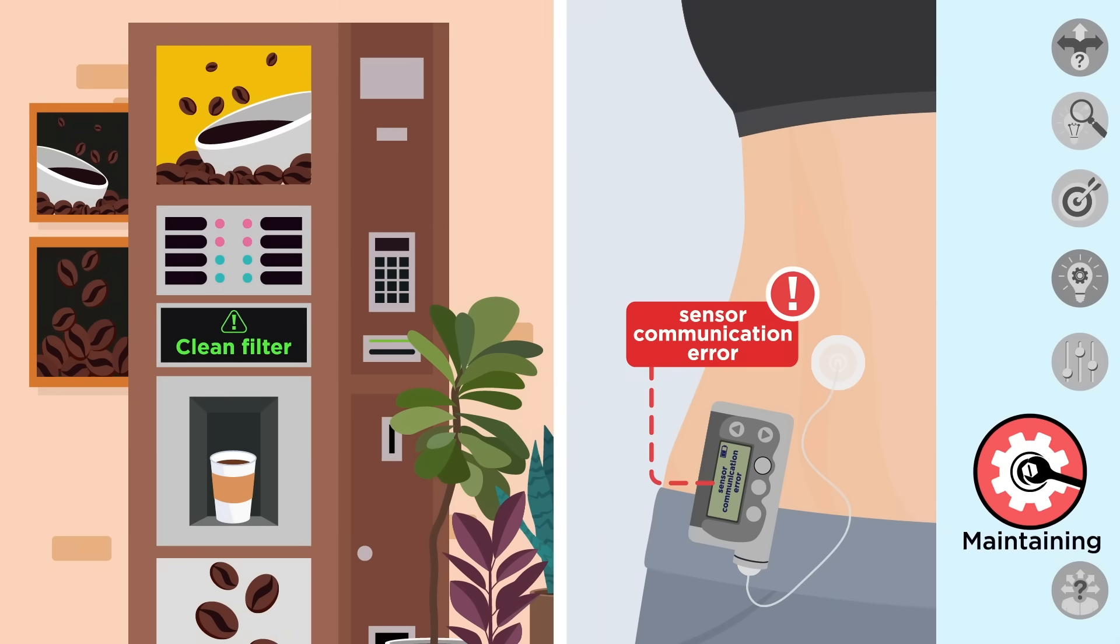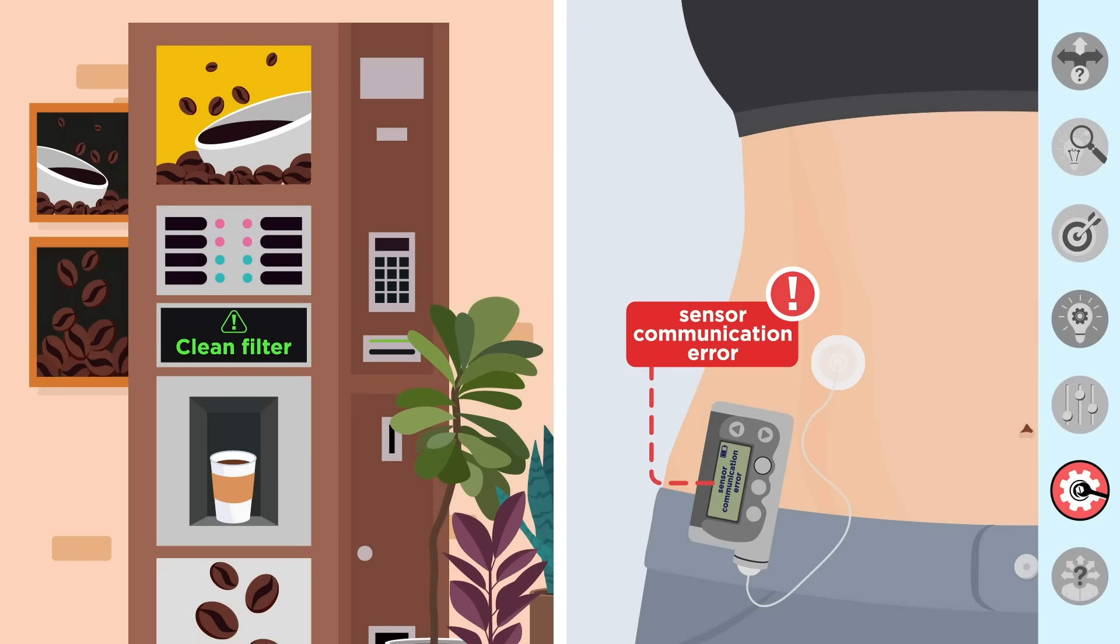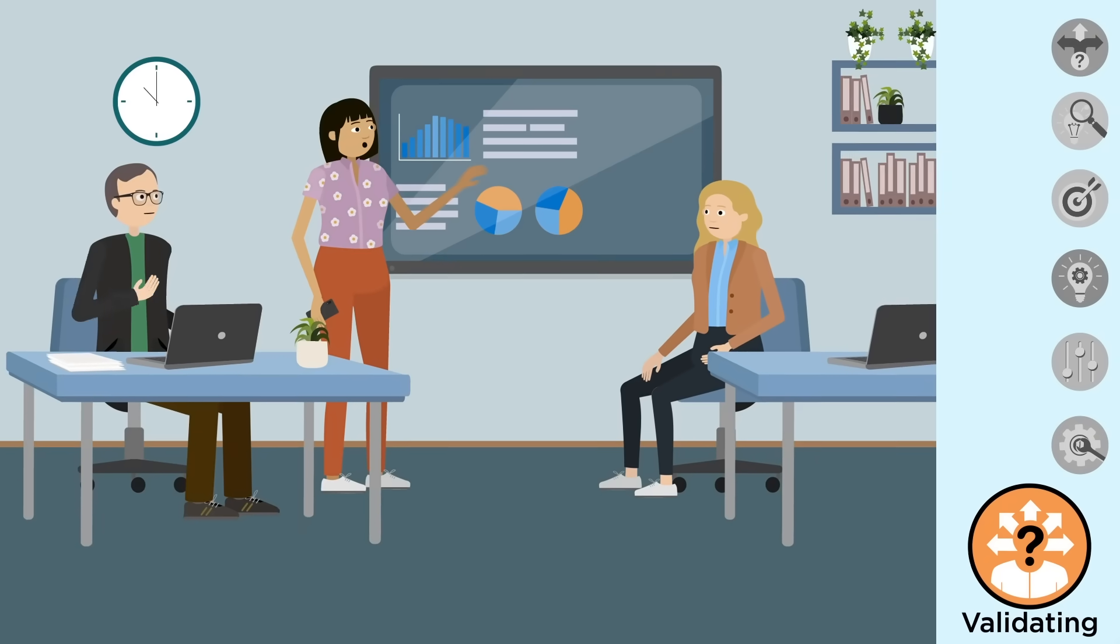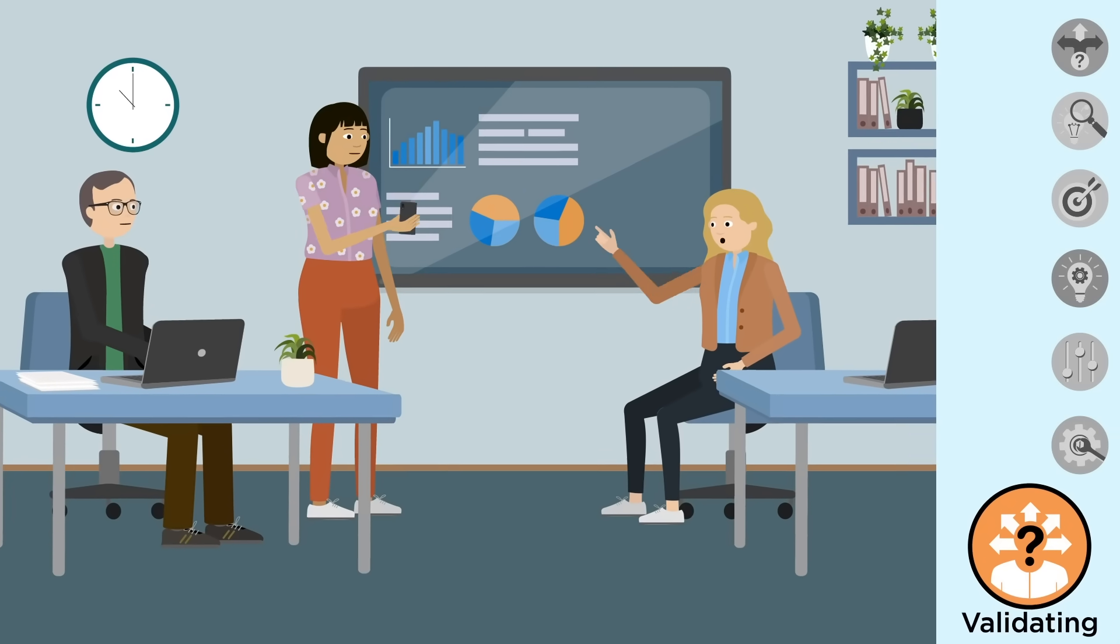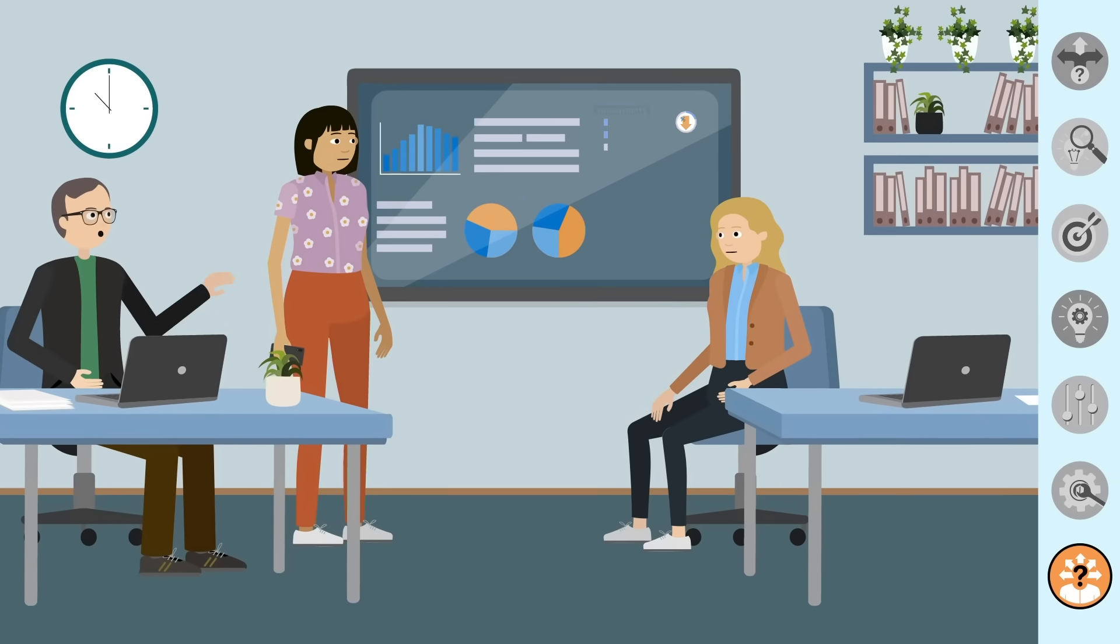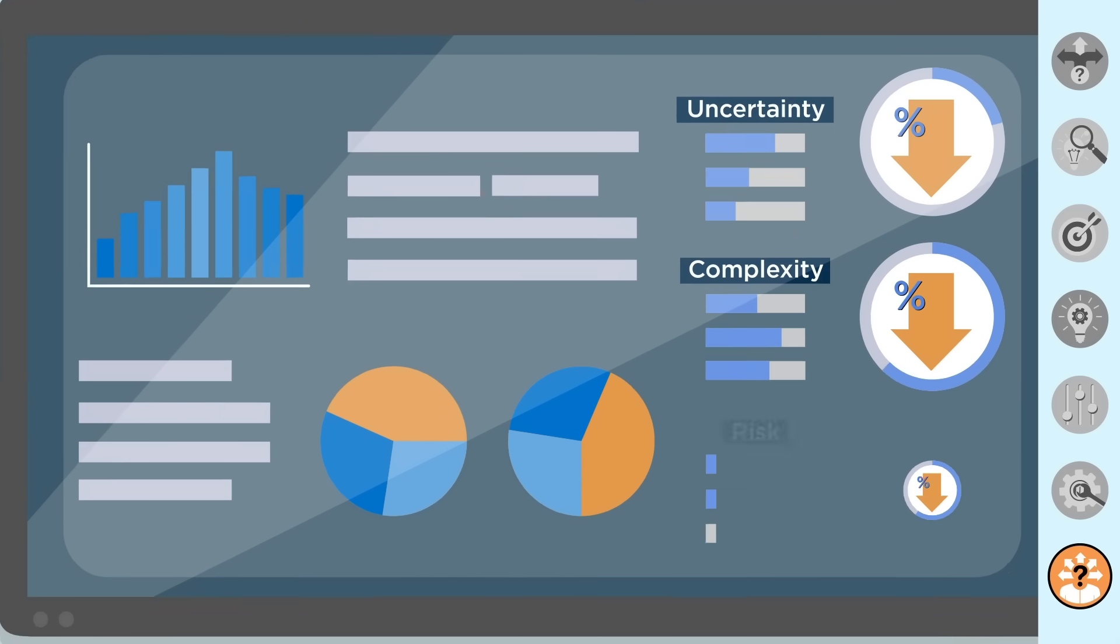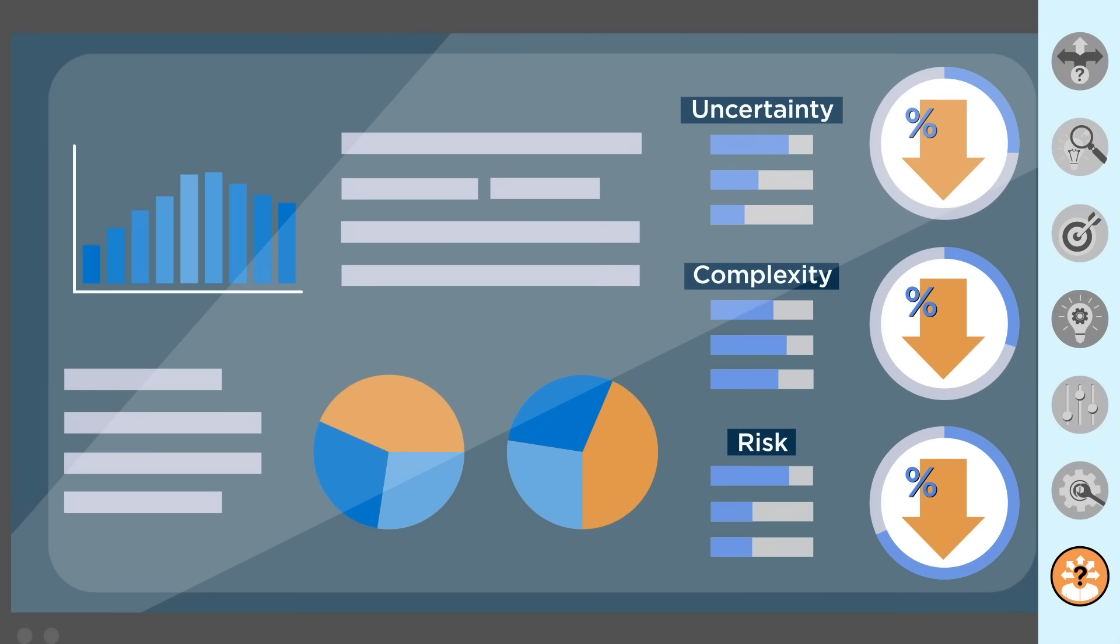Maintaining uses data to predict product or service performance and failure. Validating uses data to support decision making, reducing uncertainty, complexity and risk throughout the product-service development process.